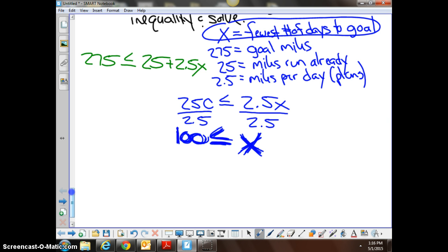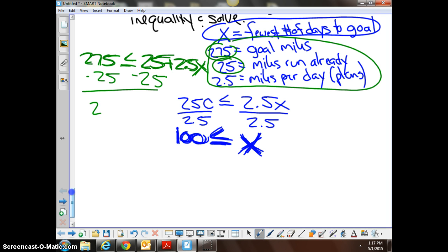Who wrote it like that? I wrote it like that. That's actually the way I hope you guys start writing them, because you're using all the information. The way Christina wrote it, she combined the 275 and the 25 without showing it. I'm okay with that, because I think these are hard enough. But I like that this shows 275, his goal, is less than or equal to 25 miles he ran plus 2.5x miles per day. Then to get to what Christina got, we subtract 25 from both sides, and we get 250 is less than or equal to 2.5x, right?